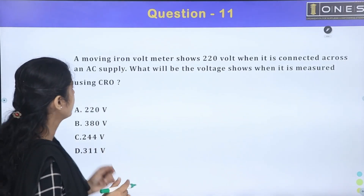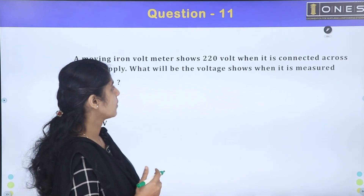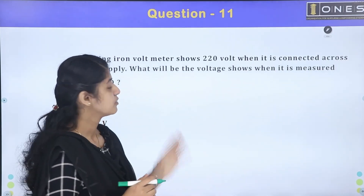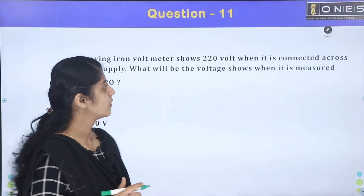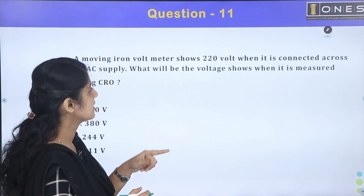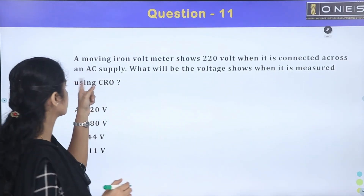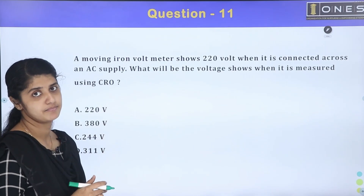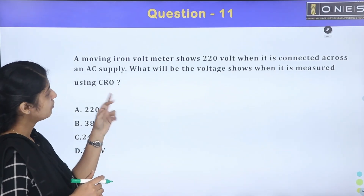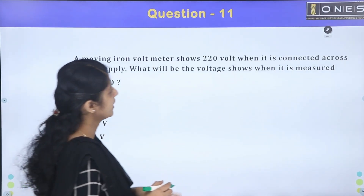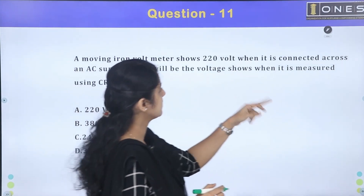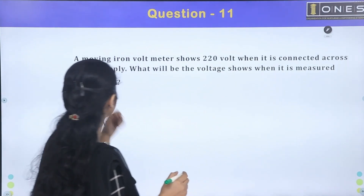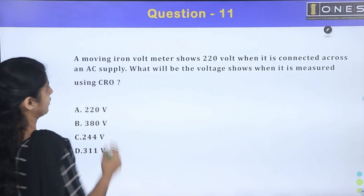A moving iron voltmeter shows 220 volts when connected across an AC supply. What will be the voltage shown when it is measured using a CRO?